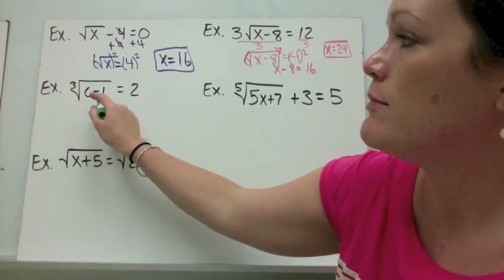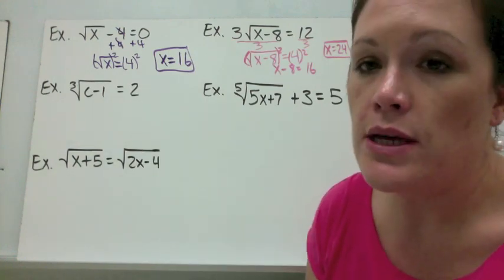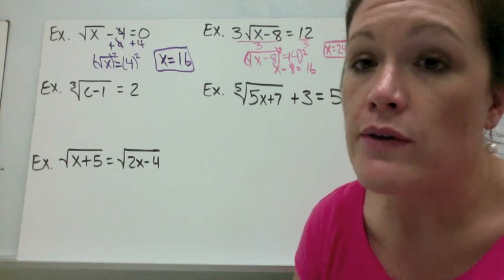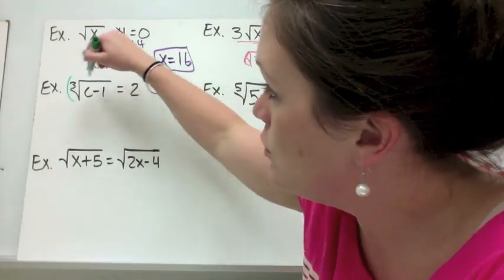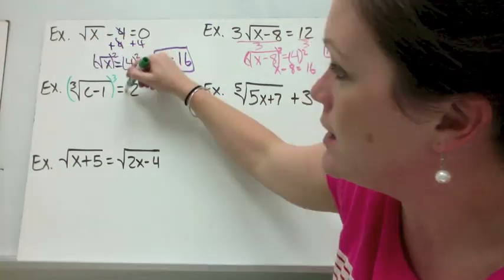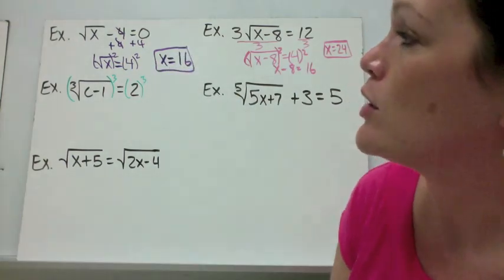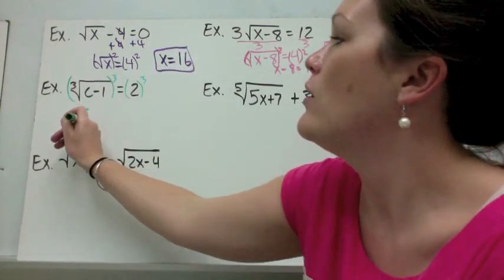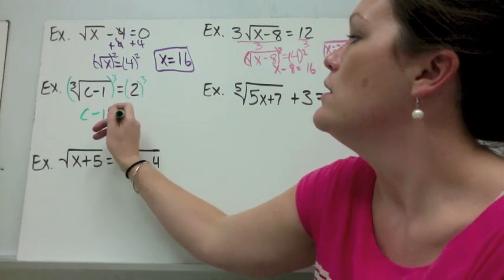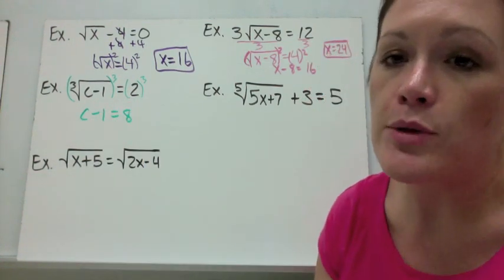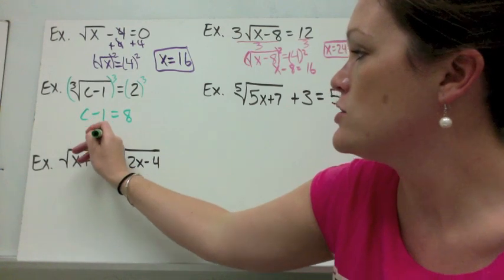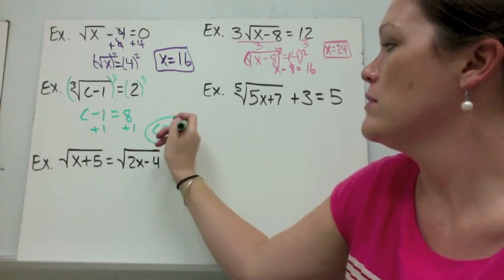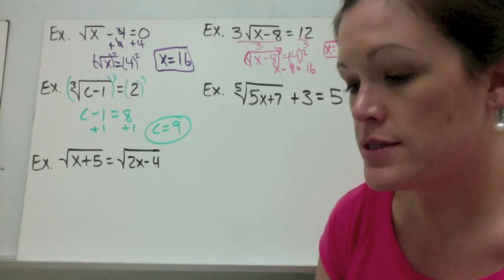Example 3: The cube root of c minus 1 equals 2. This one is already by itself, so we just need to get rid of it — cube both sides, taking both sides to the third power. The cube root and the cube are opposites, so they cancel out. We have c minus 1 equals 8, then add 1 on both sides to get c equals 9.